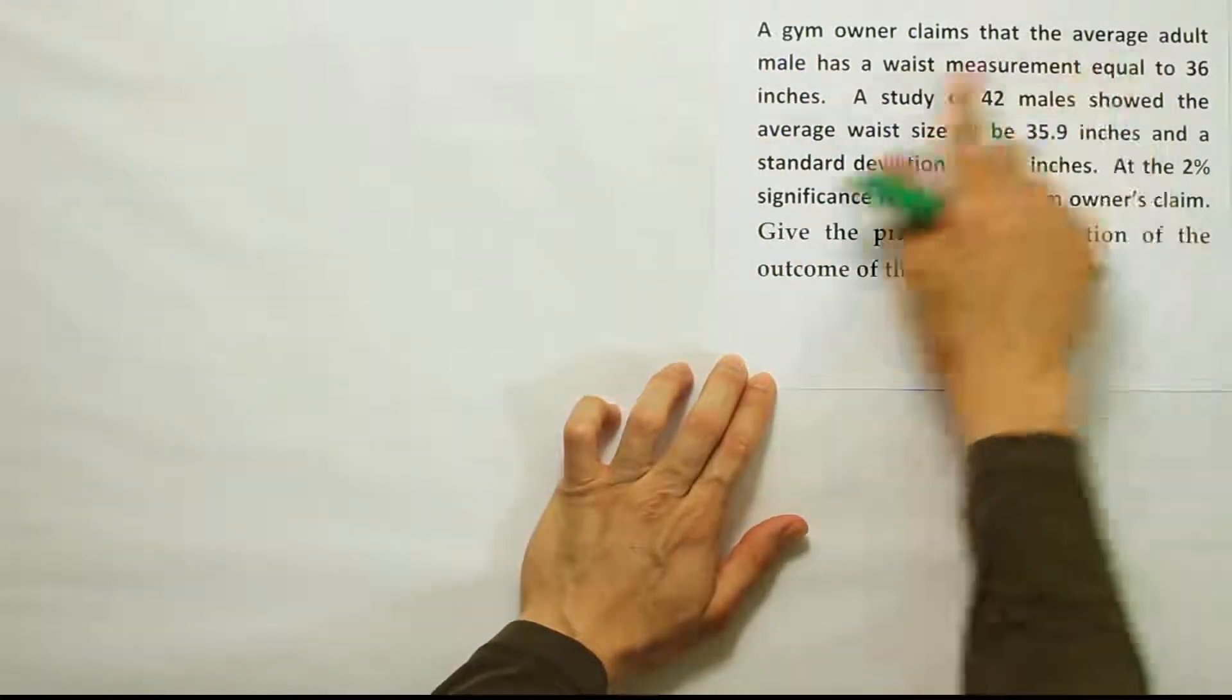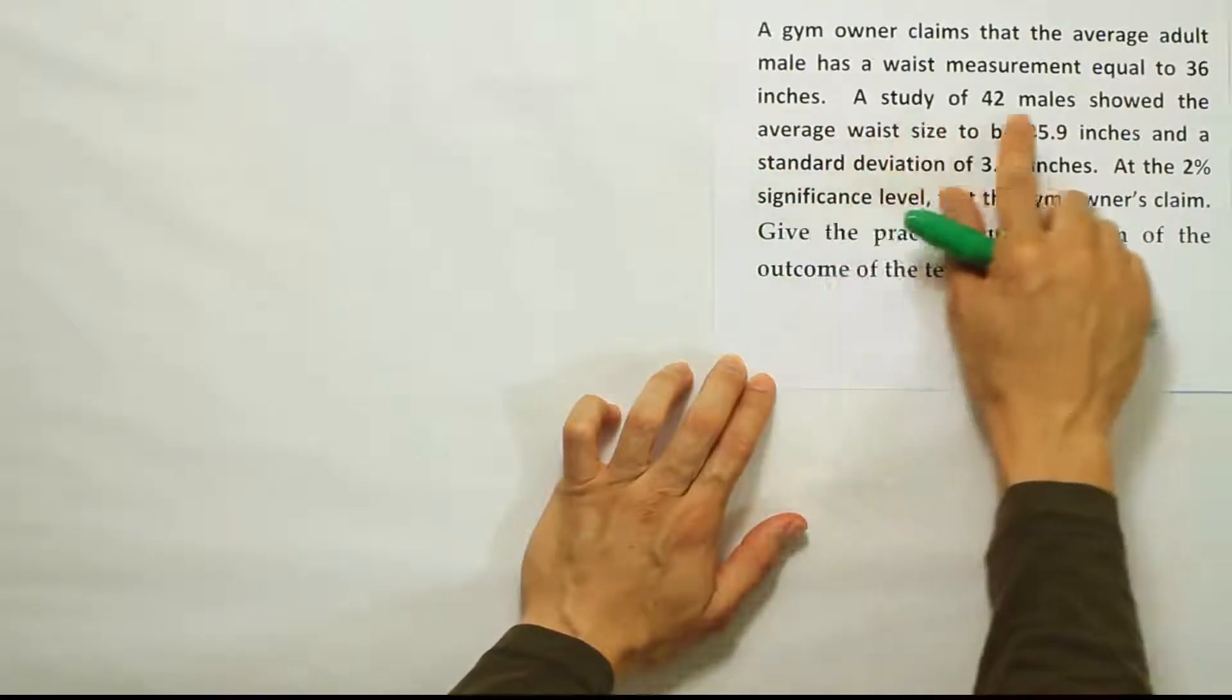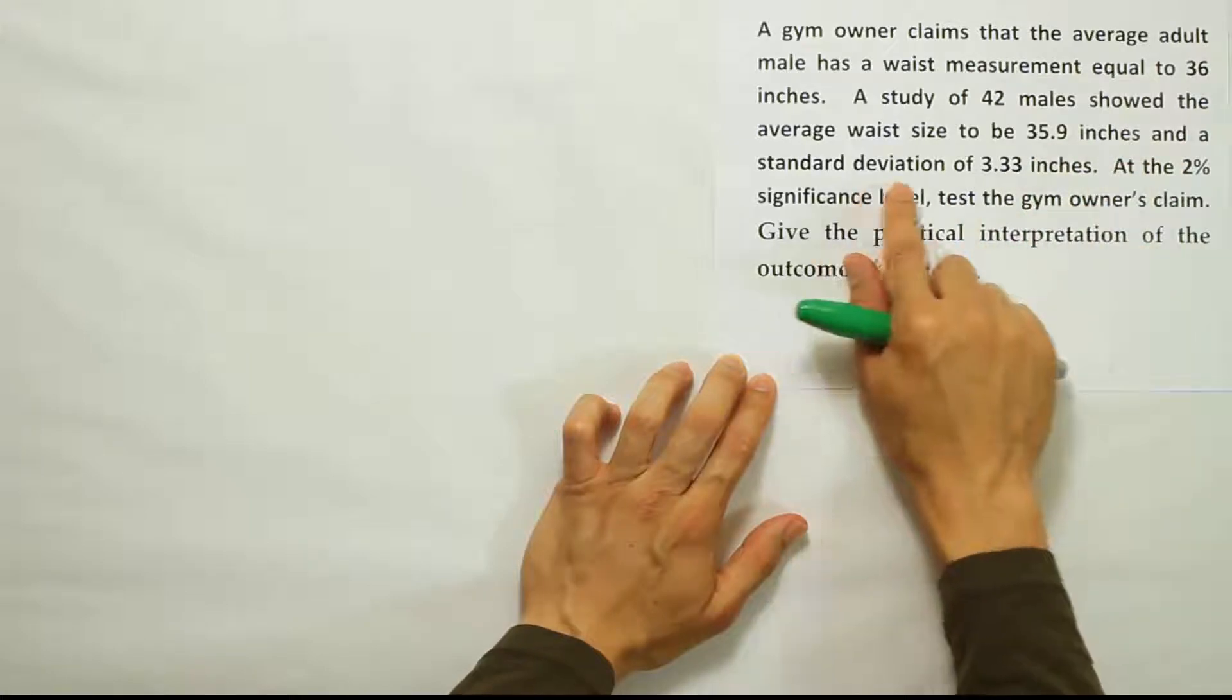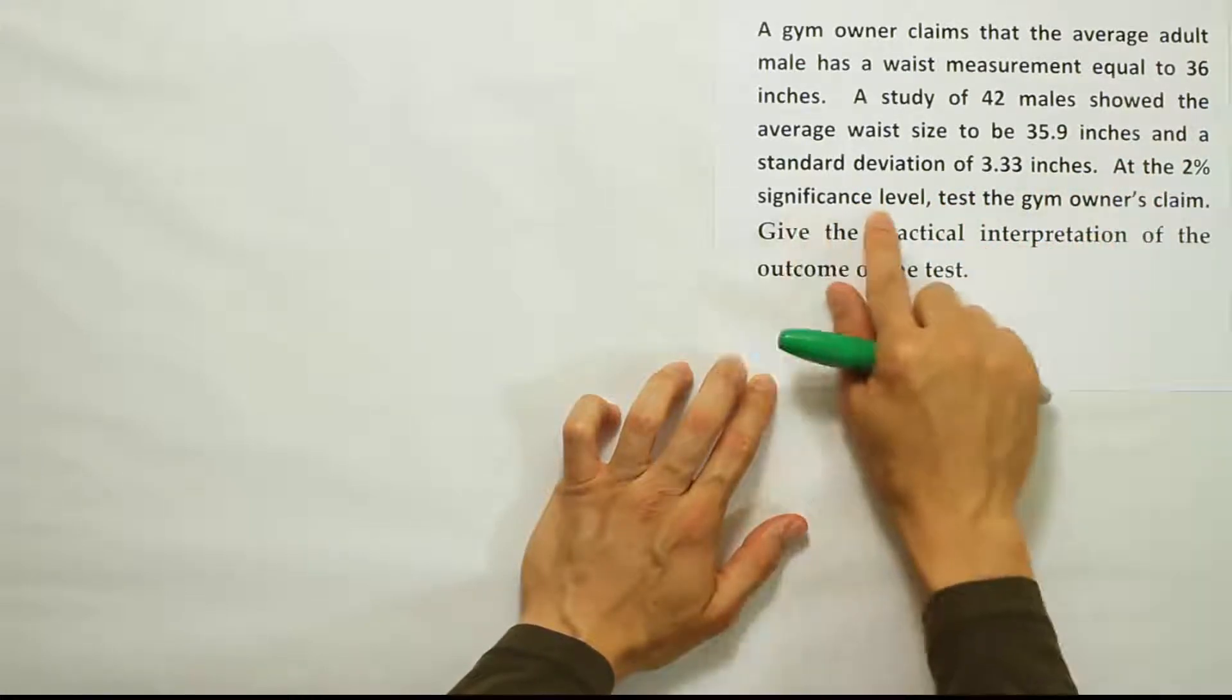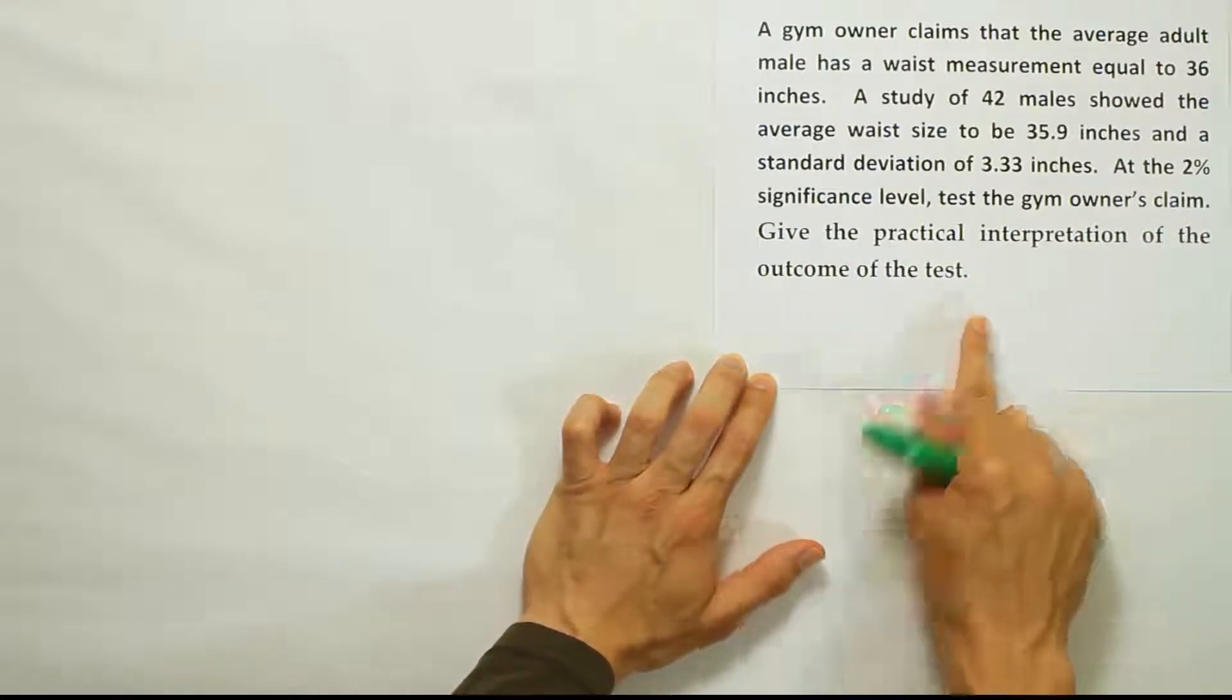A gym owner claims that the average adult male has a waist measurement equal to 36 inches. A study of 42 males showed the average waist size to be 35.9 inches and a standard deviation of 3.33 inches. At the 2% significance level, test the gym owner's claim. Give the practical interpretation of the outcome of the test.